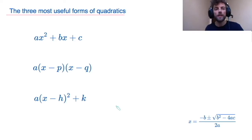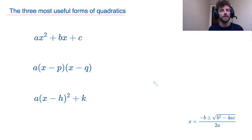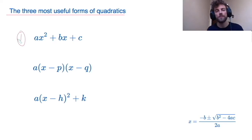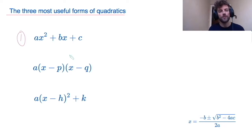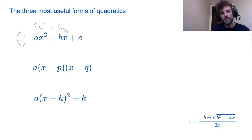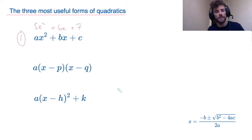Now let's look at the three most useful forms in which quadratic equations can typically come. The first most useful form is ax squared plus bx plus c. It's important that we understand that a, b, and c are simply constants here. For example, it could be something like 5x squared plus 6x plus 7. A, b, and c are simply numbers.